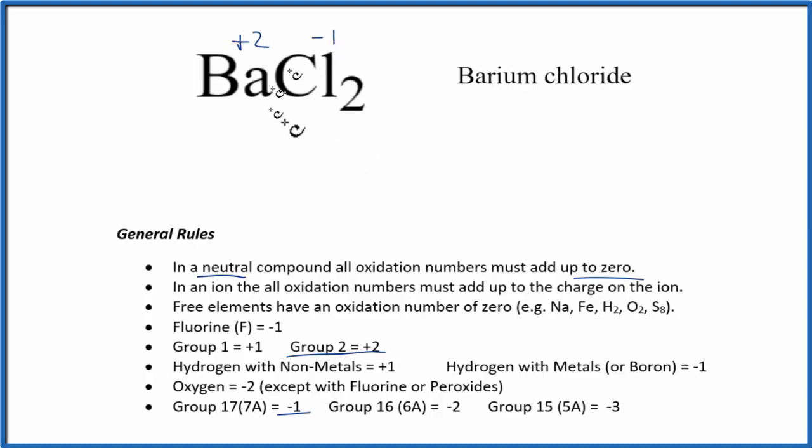So these are the oxidation numbers for each element here in the barium chloride compound. We can check this though, because we said they'll all add up to zero. So I have one barium atom, times that plus 2, plus the two chlorines, and each one is minus 1. That should equal zero. So 2 plus a minus 2, that gives us zero.